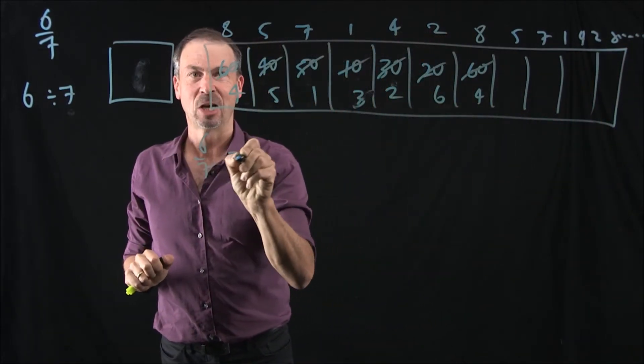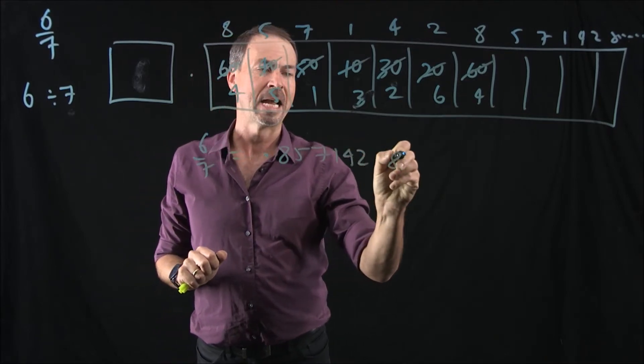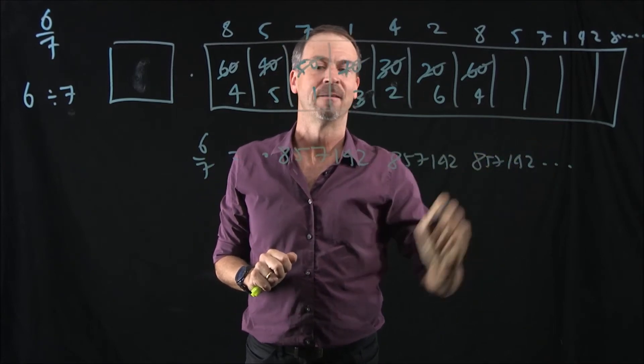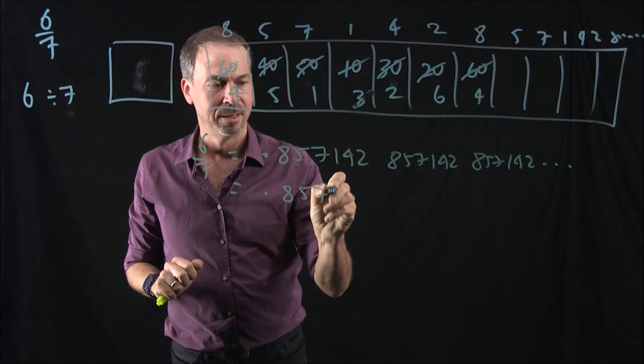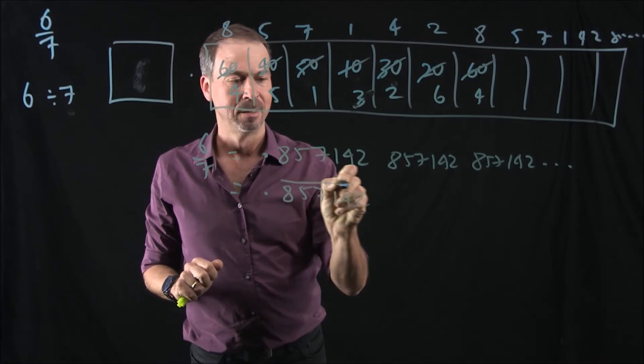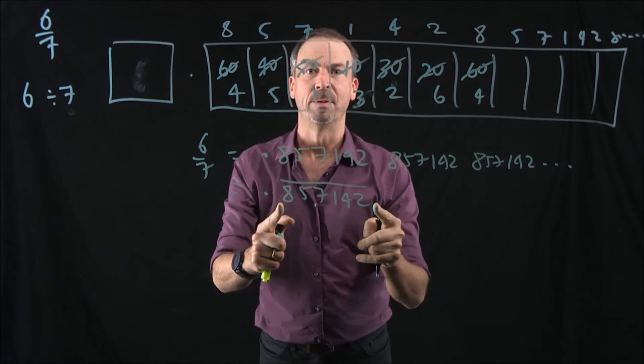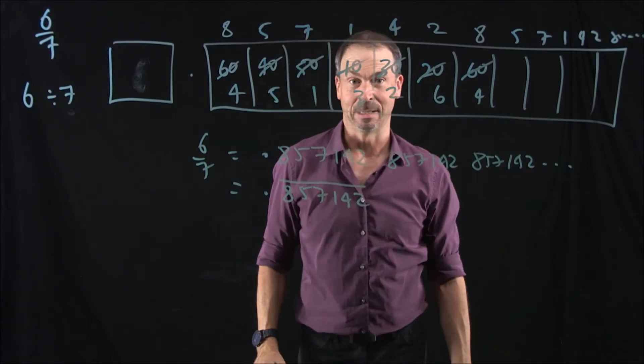So 6 sevenths is going to be 0.857142, 857142, 857142 forever. And some people like to use a horizontal bar to denote a repeating pattern. It's called a vinculum, a very cool word. That means that group of digits gets repeated over and over again. So even 6 sevenths is a repeating decimal.